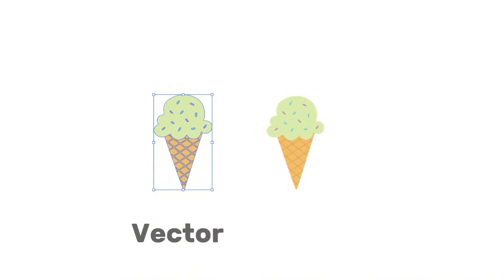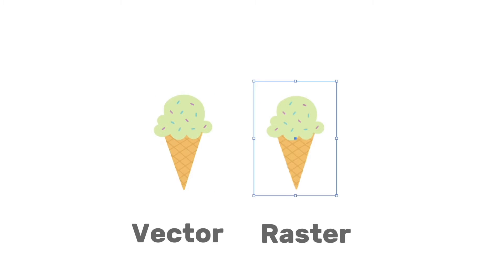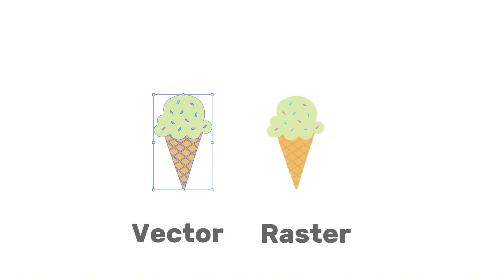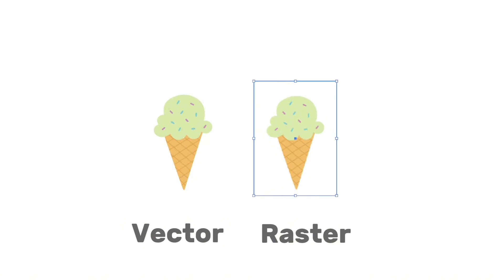Here is a quick example. The ice cream on the left is a vector image and the ice cream on the right is a raster image. They look the same at a small size, but if you open the image in Illustrator and click on the vector one, you can see the paths are selected. If you click on the raster one, you will see a bounding box instead.